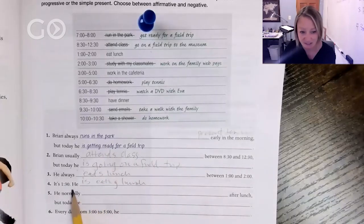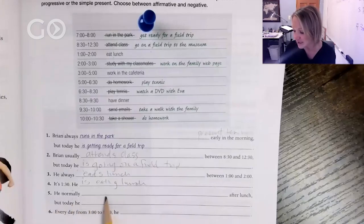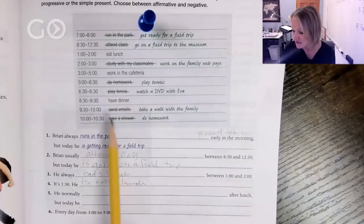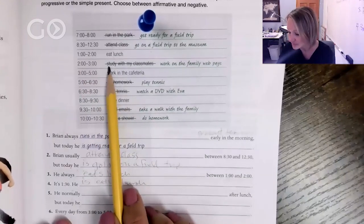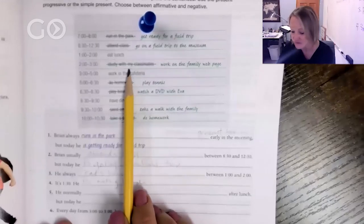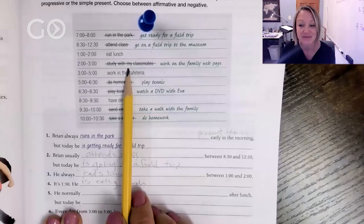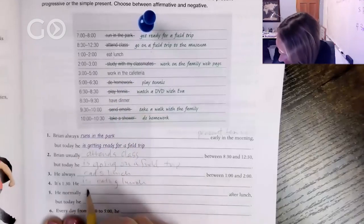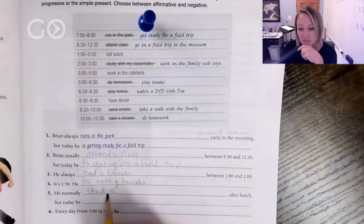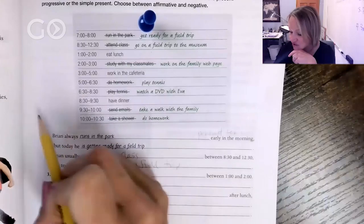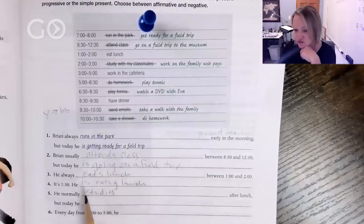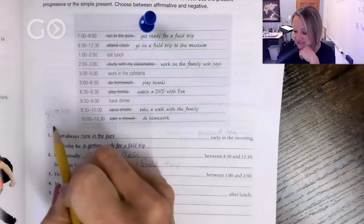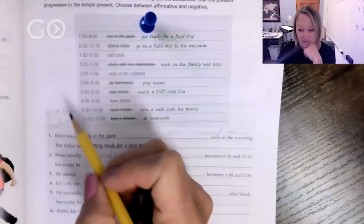Number five has two blanks. He normally blank after lunch, but today he blank. What does he normally do? We're going to use present tense because it's something he normally does. He normally studies. Notice what happened here - the word is study, we changed that Y to an I-E-S. That's what happens with Y. We don't say he studies, we use I-E-S.